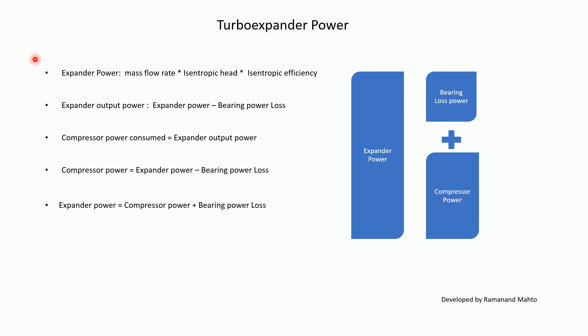Turbo Expander power is calculated as: Expander Power = mass flow rate × isentropic enthalpy drop × isentropic efficiency. Expander outlet power = Expander power − bearing losses. Compressor power = Expander power − bearing losses. Therefore Expander power = Compressor power + bearing losses.